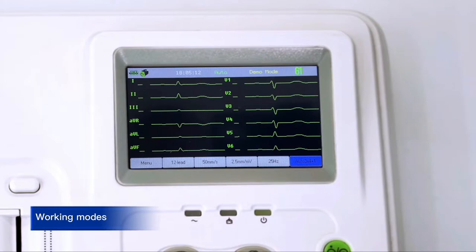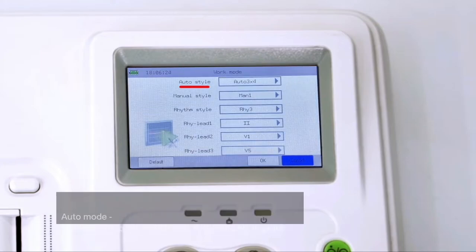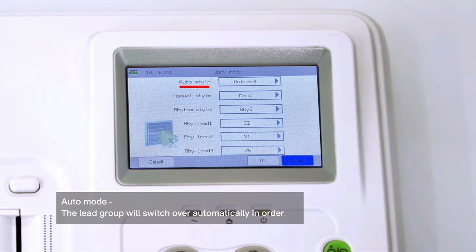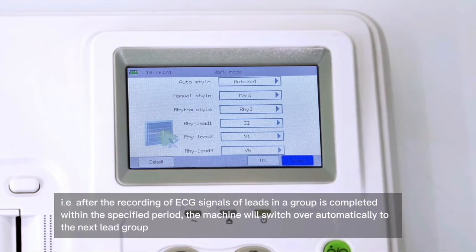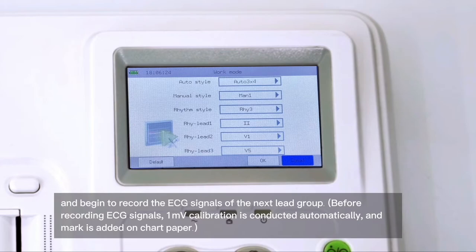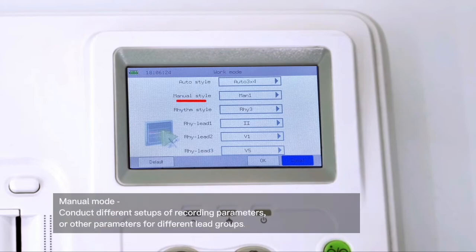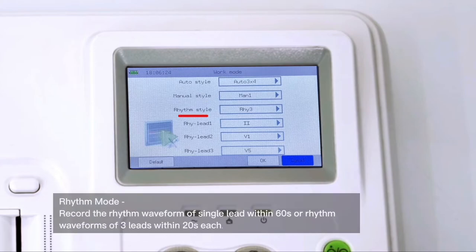E30 has three different working modes: auto mode, manual mode, and rhythm mode. During ECG recording in auto mode, the lead group will switch over automatically in order. In manual mode, users may select lead group according to actual needs and conduct different setups of recording parameters. In rhythm mode, users may select lead according to actual needs and record the rhythm waveform of single lead within 60 seconds or rhythm waveforms of three leads within 20 seconds each. This ensures a long rhythm strip will be printed if critical events occur.